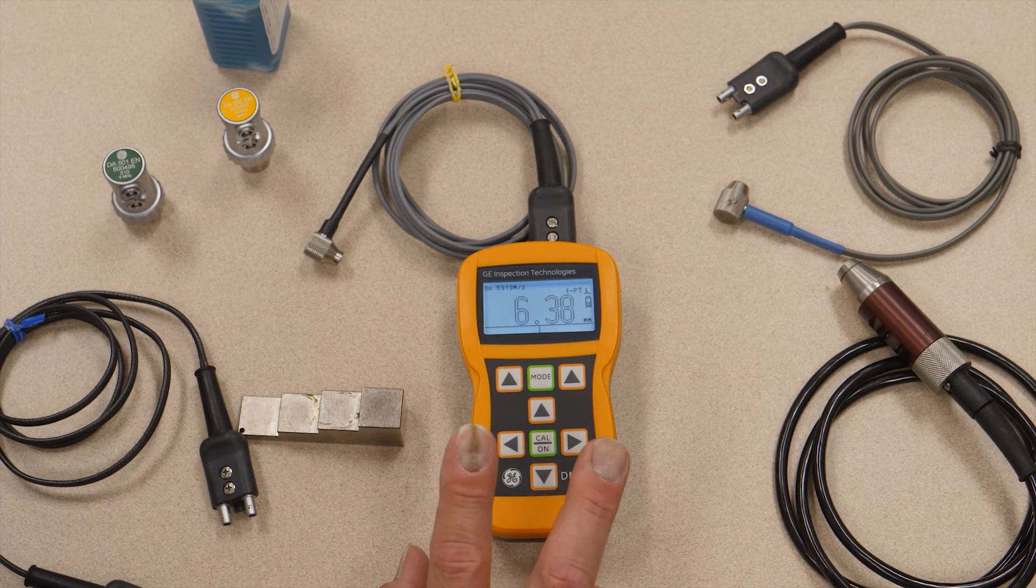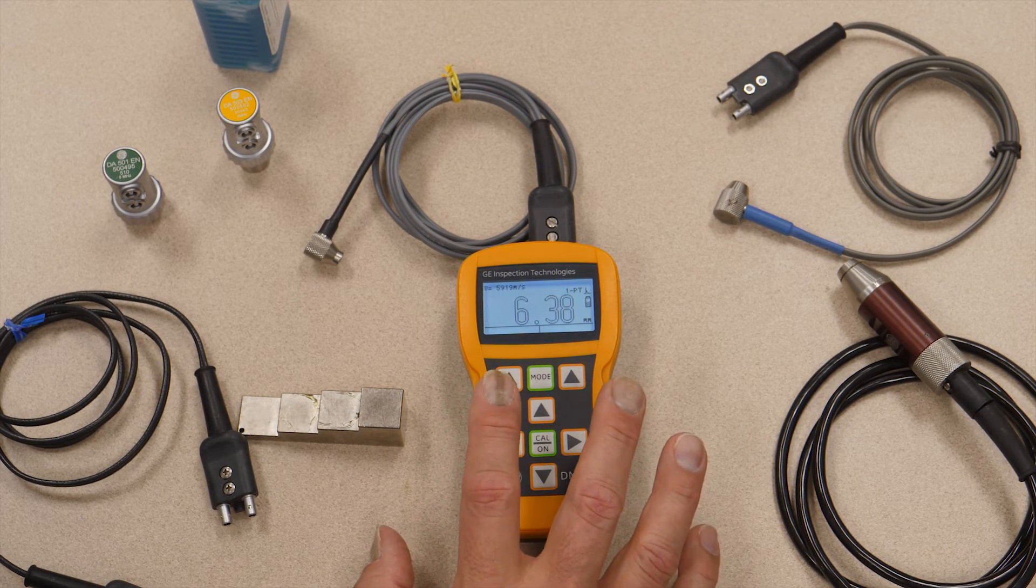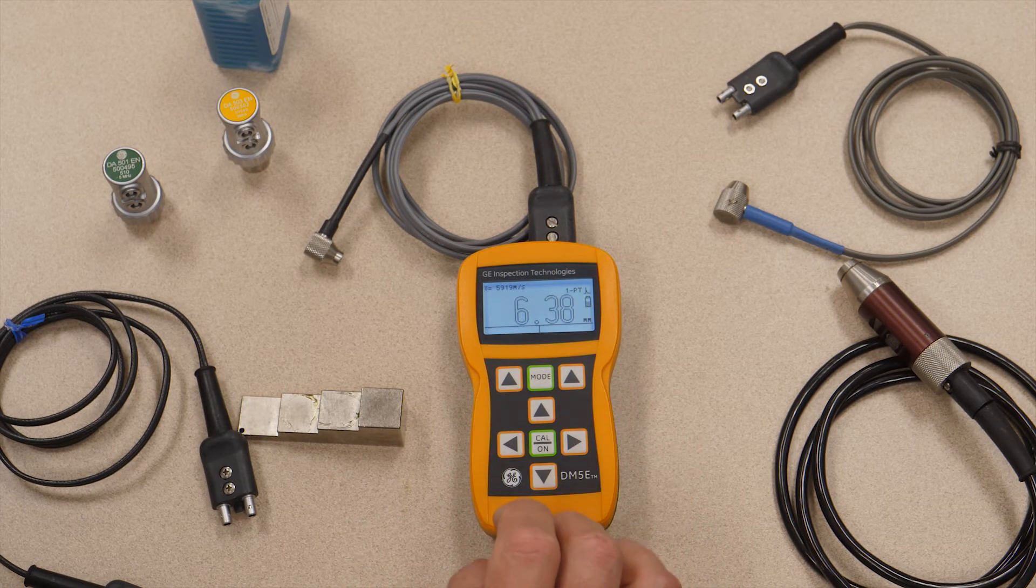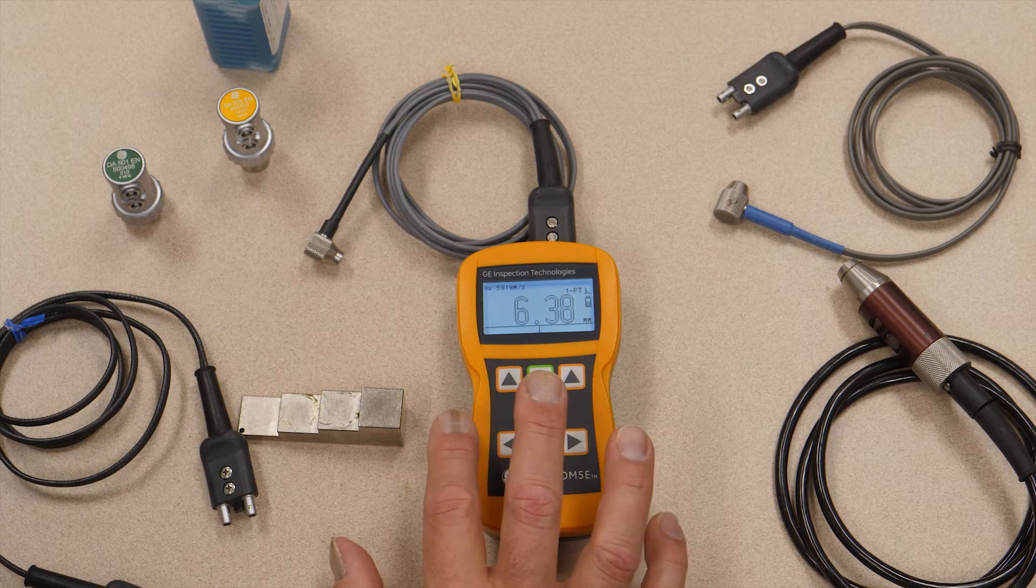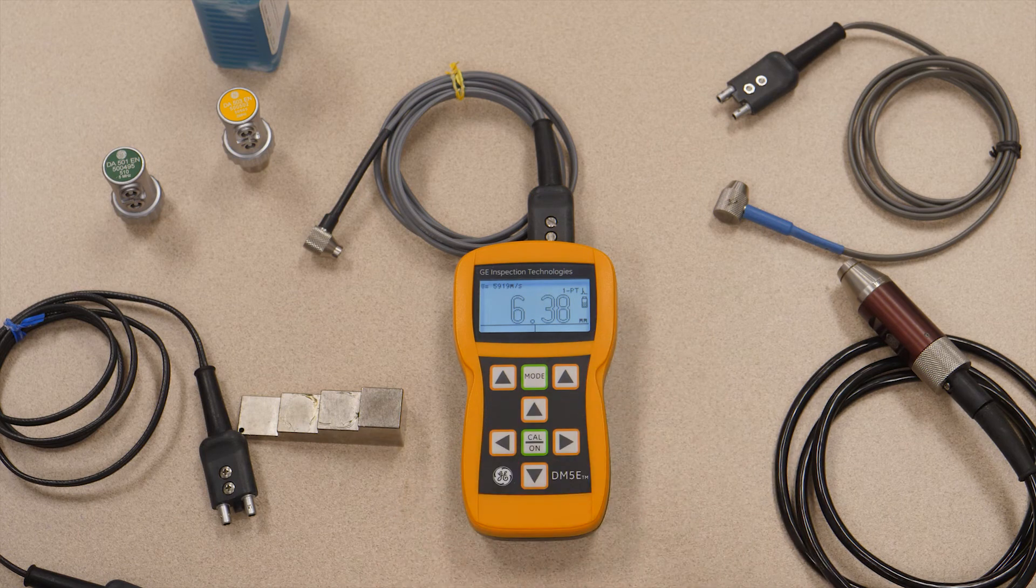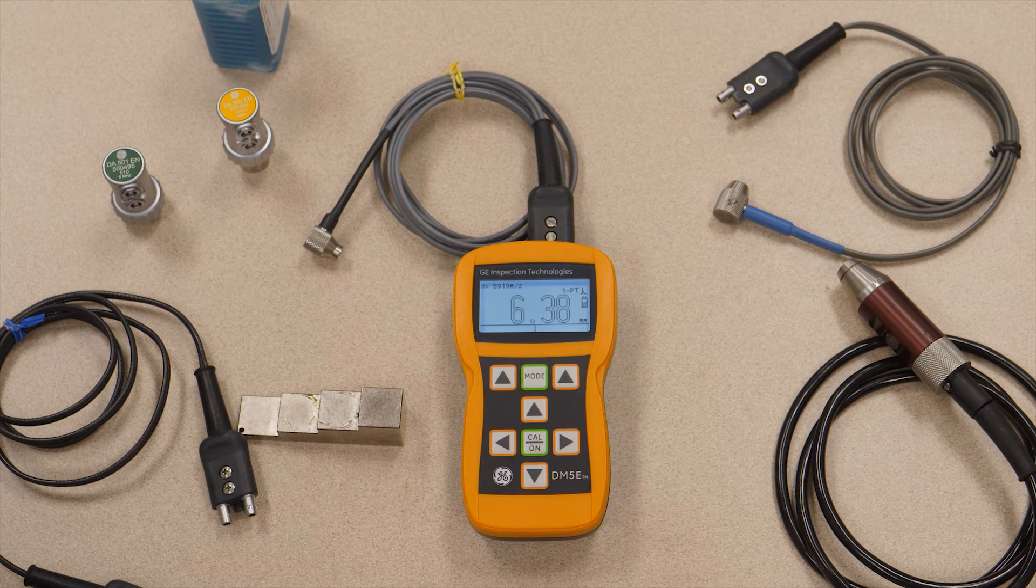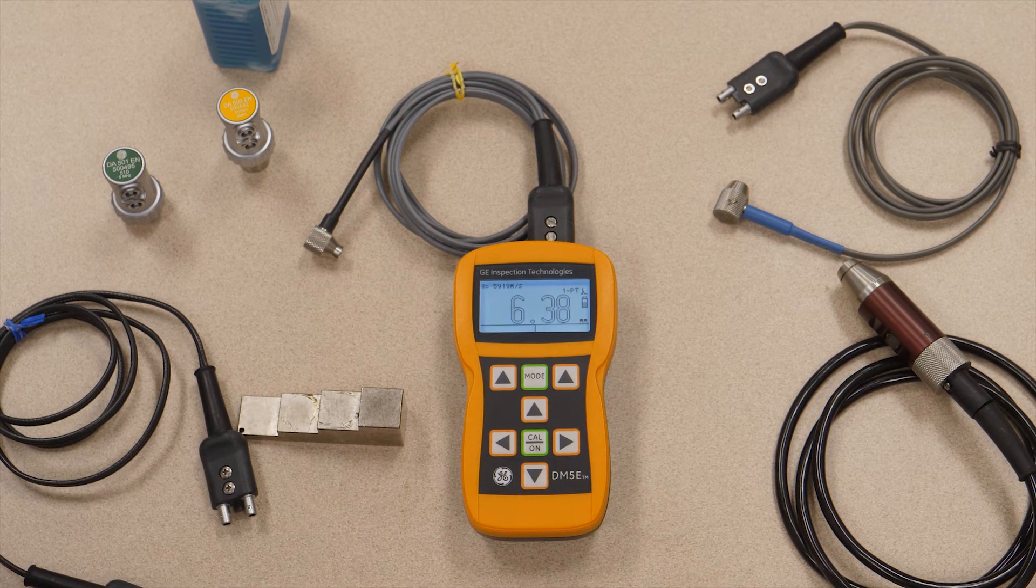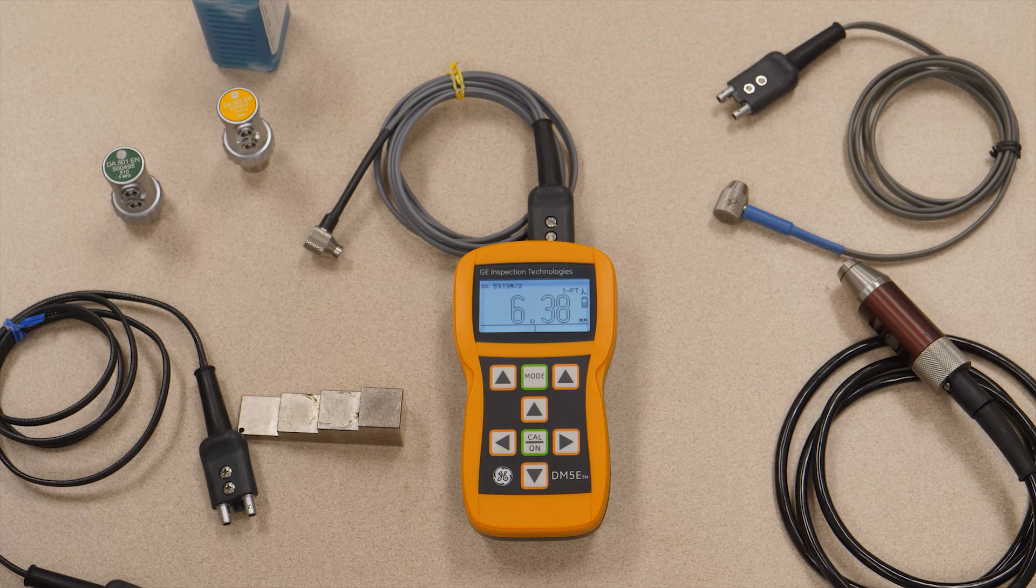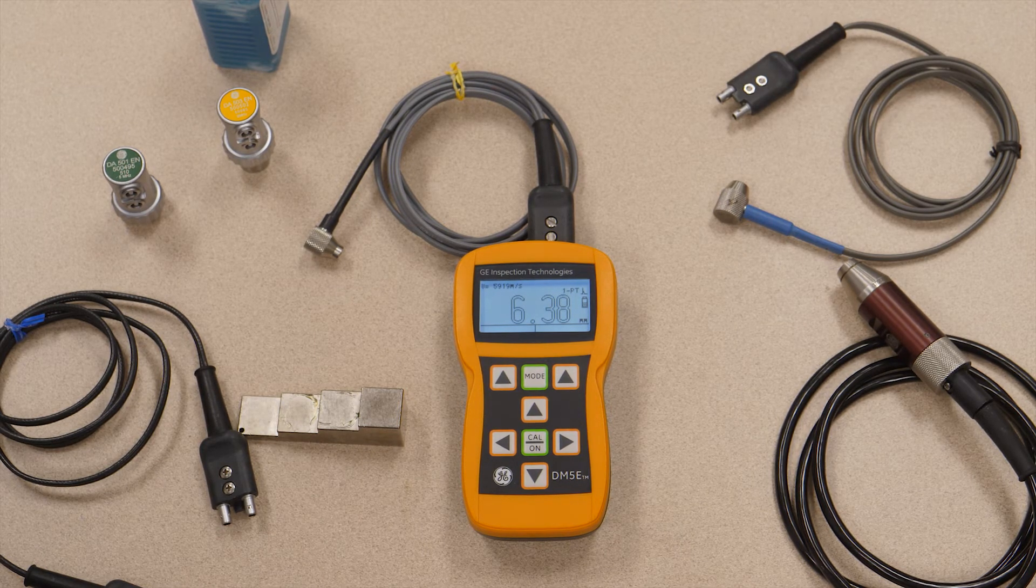Two options that we should talk about for the DM5E. Number one is data recorder. The instrument is capable of being set up with data recorder files, either lists or grids. As you're taking measurements, you store the data in the instrument. You can later take the instrument back, connect it to a PC. You can use our Ultramate software or we also include an Excel macro that allows you to pull the data recorder readings into either an Excel spreadsheet or bring them into our Ultramate thickness data management software.